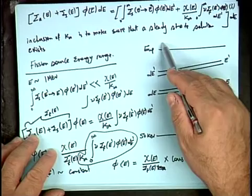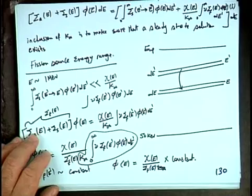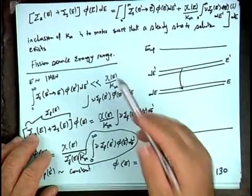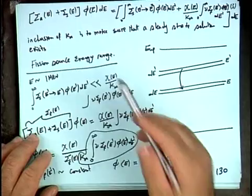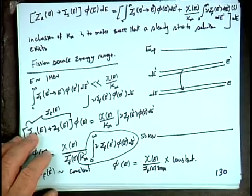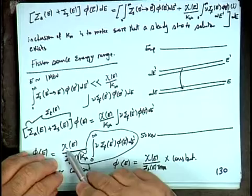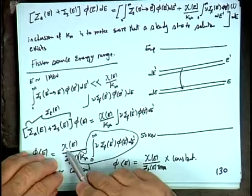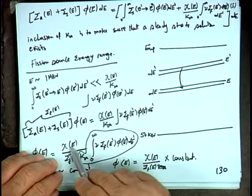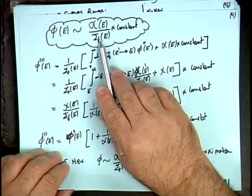The fission source is integrated from zero to infinity because fission can occur at any energy, including thermal energies. The number of source neutrons produced at energy E is given by the fission spectrum χ(E). From this balance equation we obtained the flux shape in the fast region: proportional to χ(E) modified by the cross-section shape.